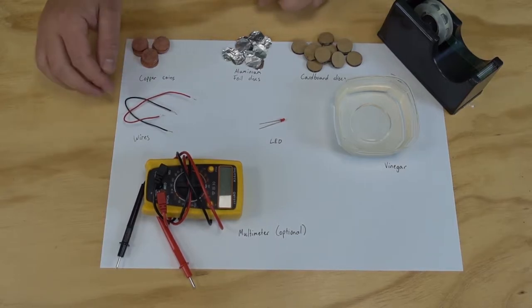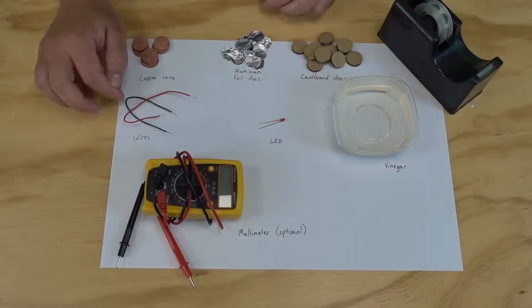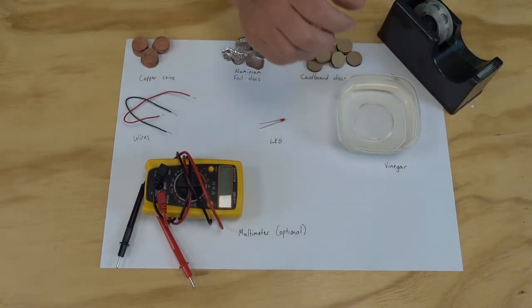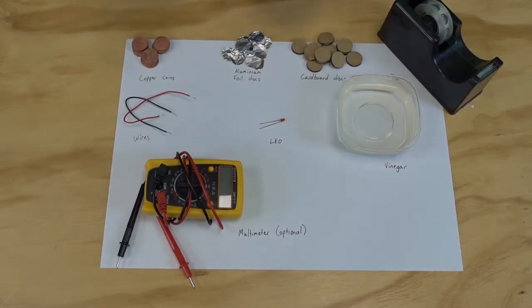We're also going to need some tape and two wires. I'm using red and black to show positive and negative here. We need an LED. If you don't have one of these laying around, look in some old broken toys. Lots of them have LEDs in them. We need some vinegar and I've got a multimeter here. This is optional, but it's going to let me see how much voltage is coming off my battery.